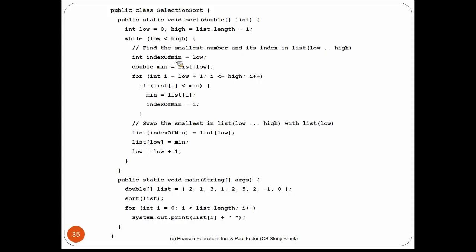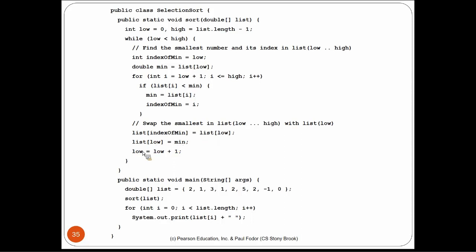The index of the minimum is given the value of low, and the minimum is the element at index low in the list. For every integer i starting from position low plus 1, as long as i is less than or equal to high, if list of i is less than the minimum, then the minimum should be set to list of i and the index of minimum is set to i. Once we found the minimum, we swap if necessary: list of index-of-minimum is assigned list of low, list of low is assigned minimum, and low is incremented by 1.